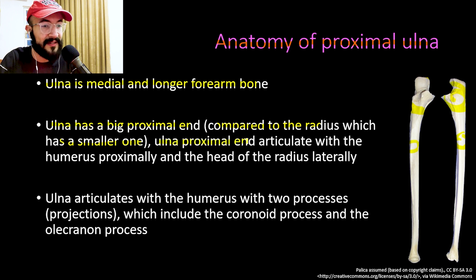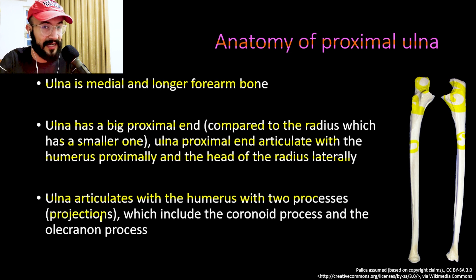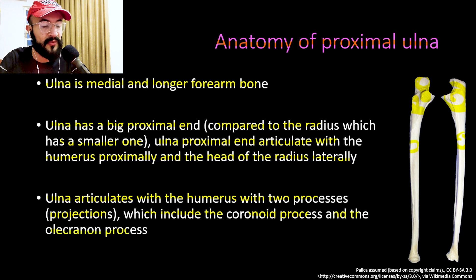The ulna's proximal end articulates with the humerus proximally and with the head of the radius laterally. The ulna articulates with the humerus via two processes, which are projections from the proximal ulna. These include the coronoid process, which is on the anterior side, and the olecranon process, which is on the posterior side.